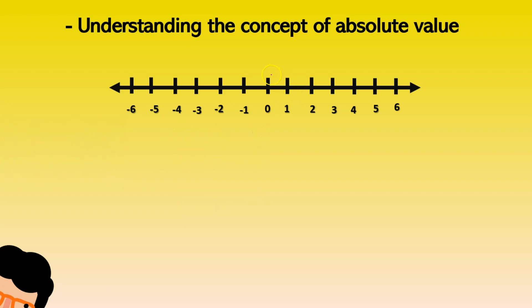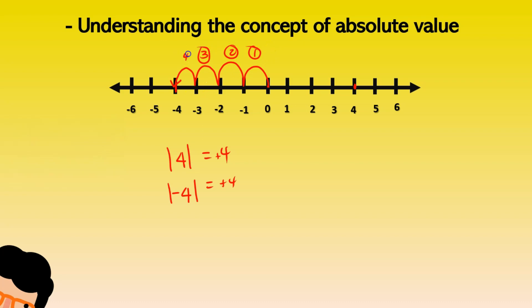Another very important thing about absolute value: if we have a number like 4 and a number like minus 4, the reason the absolute value of both is positive 4 is because it counts the number of steps between those two numbers and zero. So from 0 to minus 4, you have 1, 2, 3, 4 spaces, and between 0 and 4, you also have 1, 2, 3, and 4. If you want to learn more about absolute value using the number line, stay tuned for next videos.